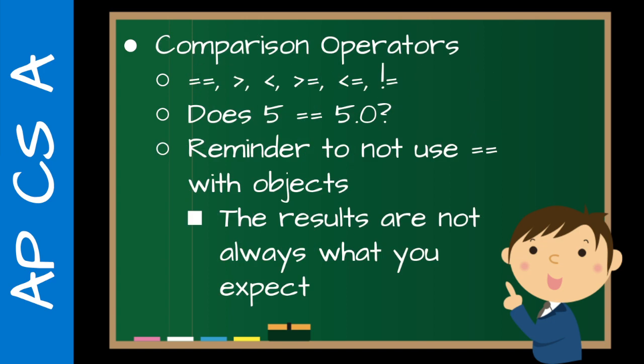Then I go into the comparison operators. So we have equals, greater than, less than, greater than or equal to, less than or equal to, and not equal. It's kind of important to point out that the exclamation point means not, because you'll see that later with the Boolean expressions. One thing you want to go over is, does five equal 5.0? And the answer is yes. It will evaluate to true.